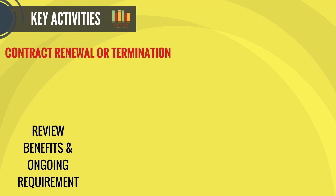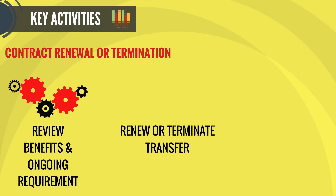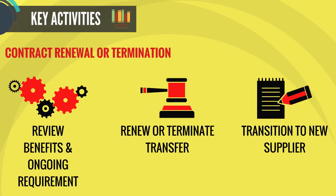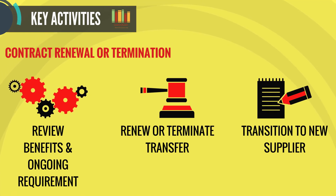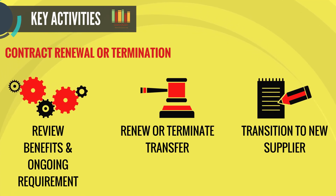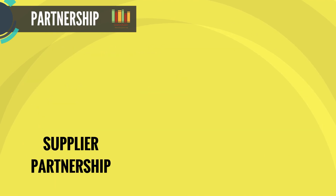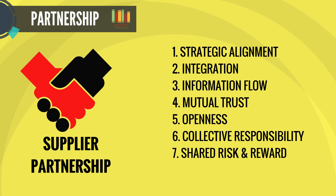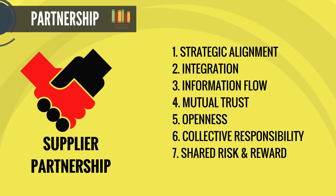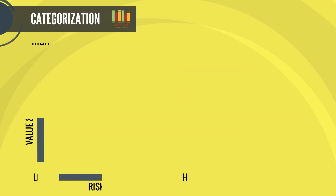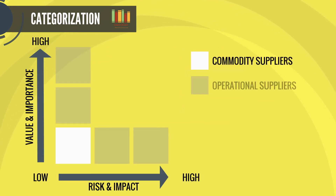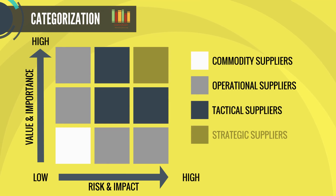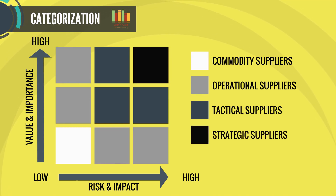Contract renewal or termination includes reviewing benefits and ongoing requirements, renewing or terminating and transferring, and transitioning to a new supplier or internal resources. Unlike traditional hierarchical methods, supplier partnership enables suppliers to work with the customer, providing strategic solutions and helping deliver better services. To successfully select the most appropriate type of supplier relationship, there needs to be a clear understanding of the business objectives that are to be achieved.